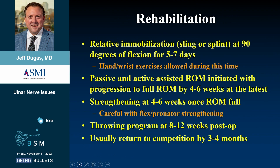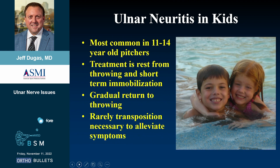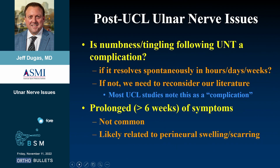Post-operatively, relative immobilization with a sling or splint at 70–90 degrees for a few days, then early wrist and hand exercises, followed by passive and active-assisted range of motion and later strengthening. Throwing is typically resumed by 8–12 weeks, with return to competition at 3–4 months. In pediatric cases — most common in 11–14 year old pitchers — treatment is usually rest with gradual return; transposition is rarely needed in this age group.